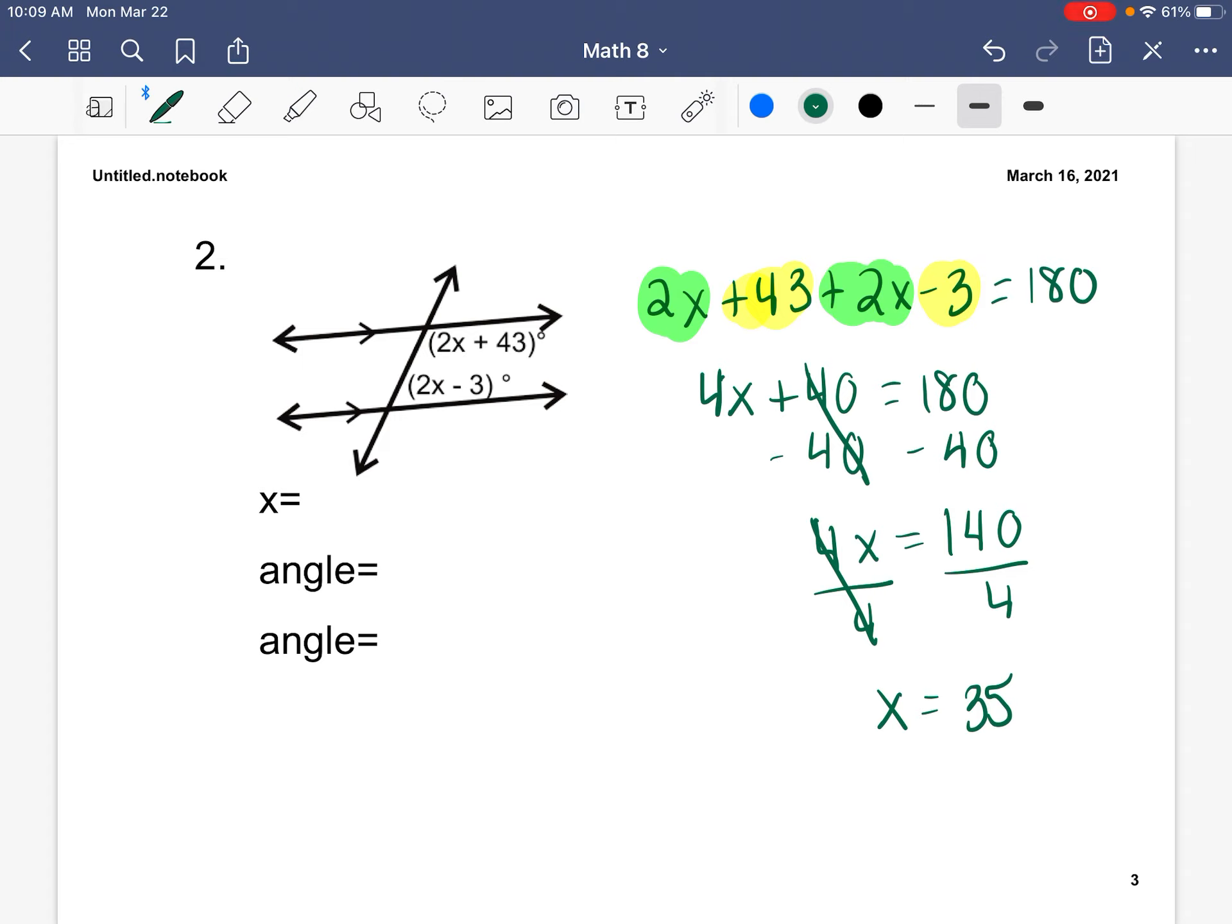So now we know x. So the next thing we need to do is plug 35 in for both of our missing angles to solve. So the first one will have 2 parentheses 35 plus 43. That equals 113 degrees. Our second one is 2 parentheses 35 minus 3. That gets us 67 degrees.